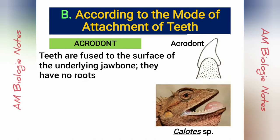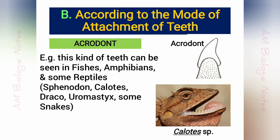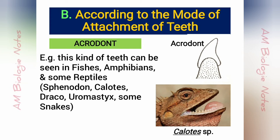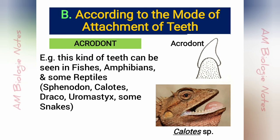Acrodont: In this condition, the teeth are fused to the surface of the underlying jawbone. They have no roots and are attached to the edge of the jawbone by fibrous membrane. This kind of teeth can be seen in most vertebrates like fishes, amphibians, and some reptiles. In amphibians, if teeth are present, they are acrodont and homodont, except in Necturus. The acrodont-possessing reptiles are Sphenodon, Calotes, Draco, Agama, Uromastyx, and some snakes.